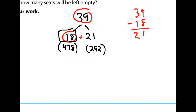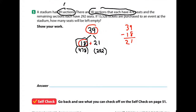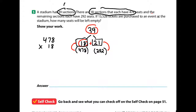Now: 18 sections have 478 seats each, and 21 sections have 292 seats each. You cannot add sections and seats and get seats — we need to multiply. I'll do 478 times 18 using the traditional method. Eight times eight is 64, carry the six. Eight times seven is 56 plus 6 is 62, carry the six. Eight times four is 32 plus 6 is 38.